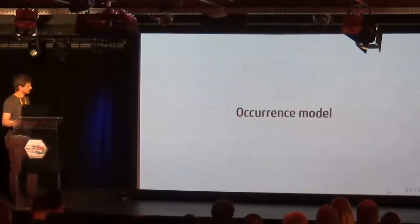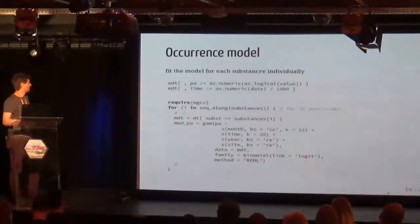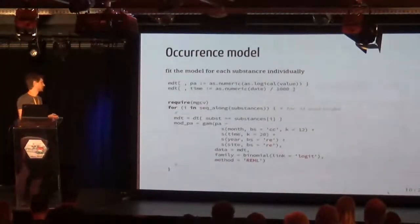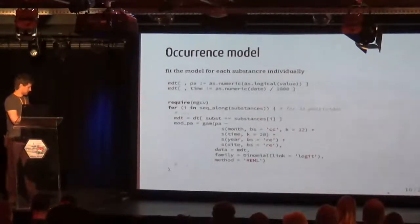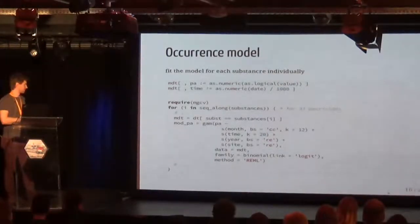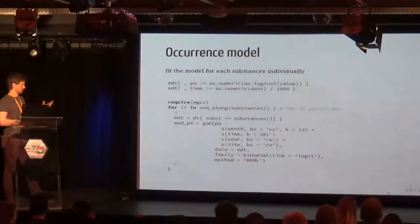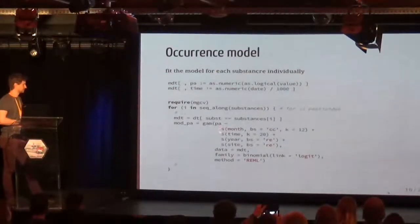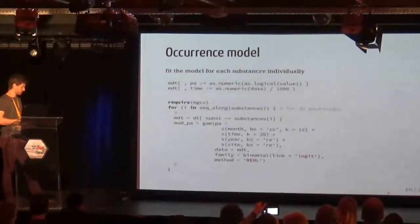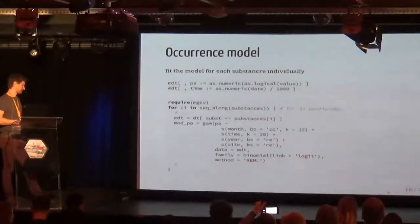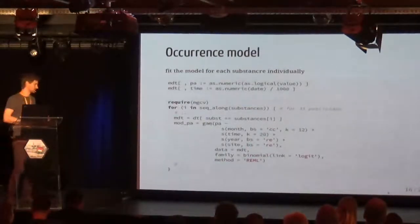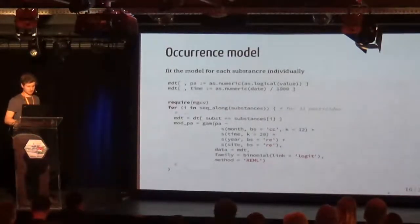Coming directly to the models: for the occurrence model we used the MGCV package and fitted a generalized additive model (GAM) for each of the 31 substances, with a binary response and the anticovariates, random effects for sites, a binomial response, and the restricted maximum likelihood algorithm.